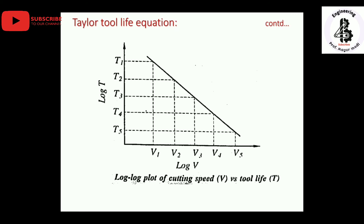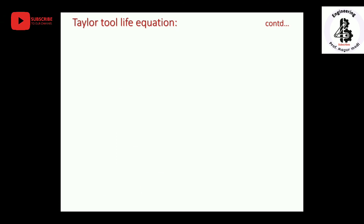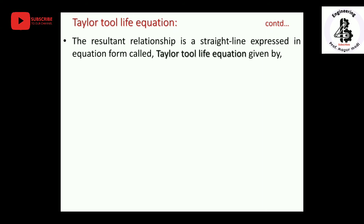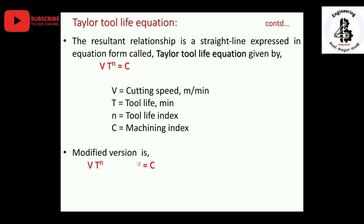On a log plot of cutting speed versus tool life, the relationship is a straight line expressed by the equation known as Taylor's tool life equation: V·T^n = C, where V is cutting speed in meters per minute, T is tool life in minutes, n is the tool life index, and C is the machining constant which depends on the material being used. The modified version of Taylor's tool life equation is: V·T^n · f^n1 · d^n2 = C, expressed in terms of speed, feed, and depth of cut.